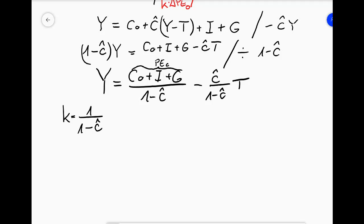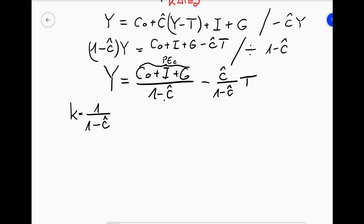You can see that the higher the marginal propensity to consume, which we call MPC or C hat, the larger the multiplier gets. So if you have C hat being, for example, half, then you would get a multiplier of 2. If however you increase this and say that C hat is 0.9, then K would be 1 over 0.1, that is 10. So the more people consume of their additional income, the higher the fiscal multiplier is going to be.